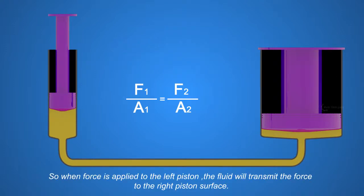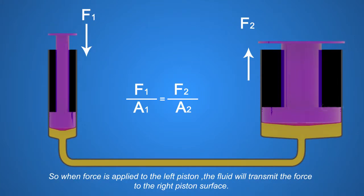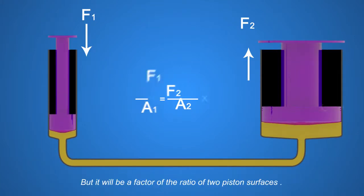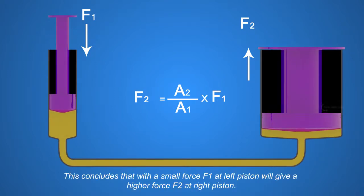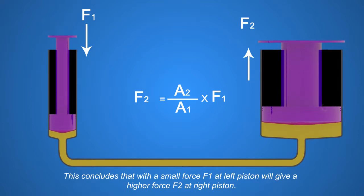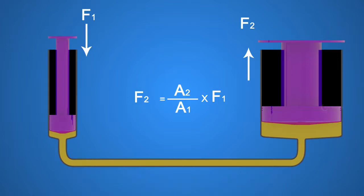So when force is applied to the left piston, the fluid will transmit the force to the right piston surface. But it will be a factor of the ratio of two piston surfaces. This concludes that with a small force F1 at left piston will give a higher force F2 at right piston, provided if A2 is greater than A1.